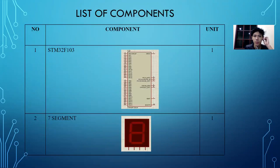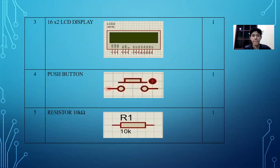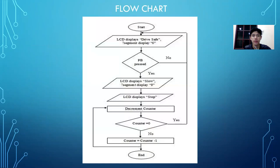This is the component list — I am using a 10K ohm resistor. This is the flowchart: the LCD displays 'Drive Safe'. If no push button is pressed, it goes back to the start. If yes, the push button is pressed and the LCD shows 'Slow' on the 7-segment.